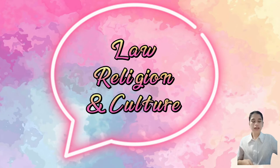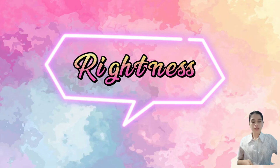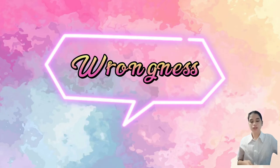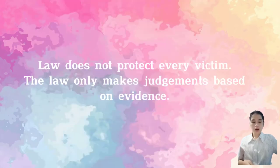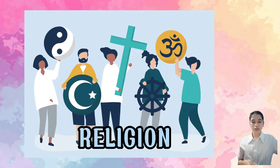There are three things that cannot be an ethical standard when assessing the rightness or wrongness of human action. First is the law. It cannot be an ethical standard because the law does not protect every victim. The law only makes judgments based on evidence, and it tells you only what to avoid but cannot tell you what to pursue.